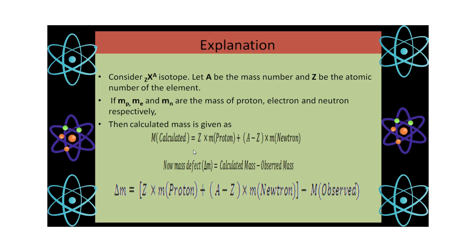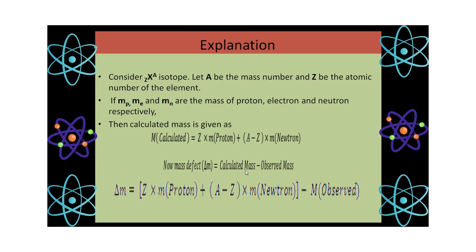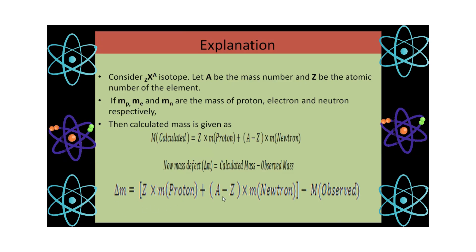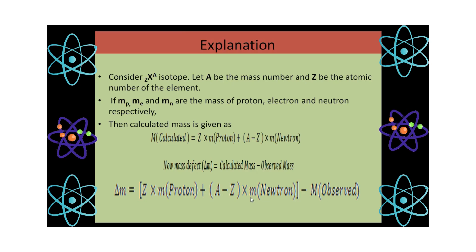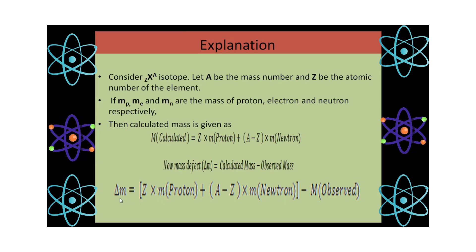But when the nucleus is formed, the observed mass is different from the calculated mass. If we calculate the difference of calculated mass and observed mass, we get the mass defect. Z multiplied by mass of each proton gives total mass of protons in the nucleus. A minus Z gives number of neutrons, and multiplying by mass of each neutron gives mass of all neutrons. The total gives calculated mass of the nucleus, and subtracting the observed mass gives the mass defect.